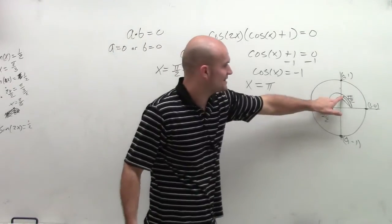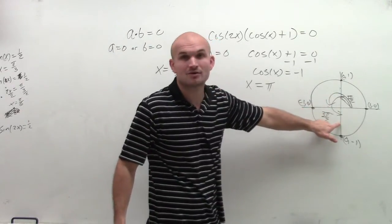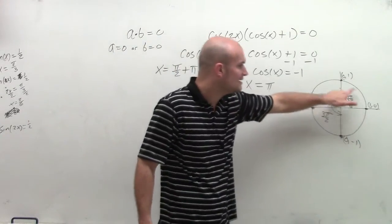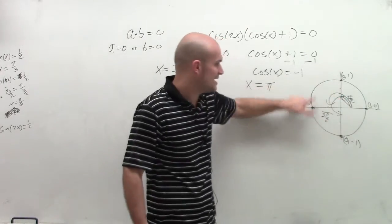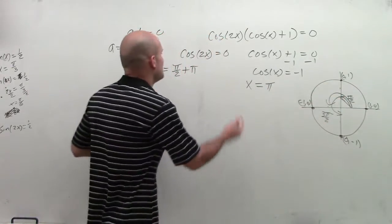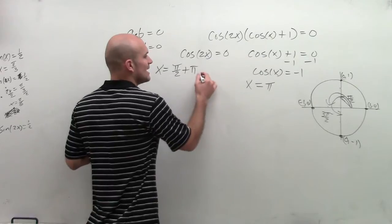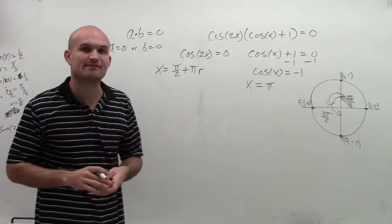If I add pi halves, and then I add the angle pi, I'm going to get to our next solution. If I add pi again, I'm going to get to another solution. Add pi again, so I can keep on adding pi. So therefore, how many times can I add pi? We don't know, so we're going to leave it with the variable r.